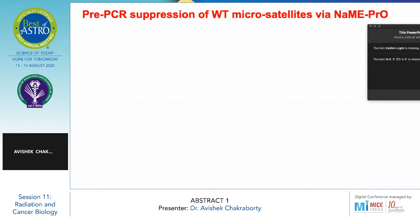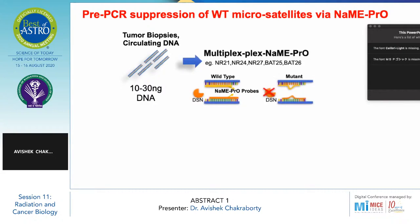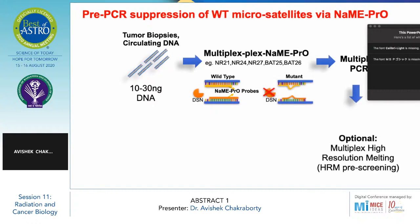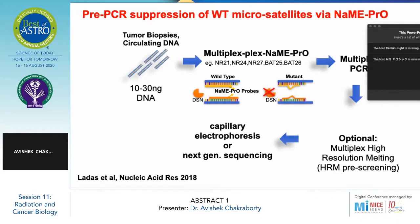Tumor biopsies circulating DNA — 10 to 30 nanograms of DNA — is followed by multiplex NAME probe targeting markers such as NR21, NR24, NR27, BAT24, and others. These are all nucleotide markers. This is followed by multiplex polymerase chain reaction, followed by optional multiplex high-resolution melting, and then capillary electrophoresis or next generation sequencing.